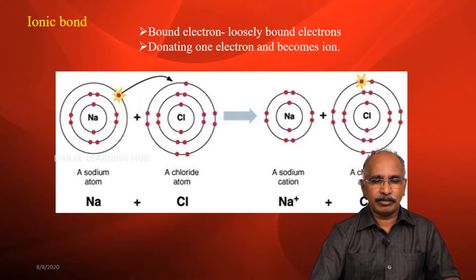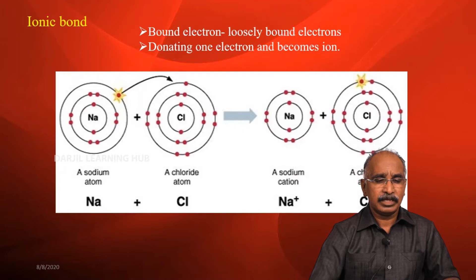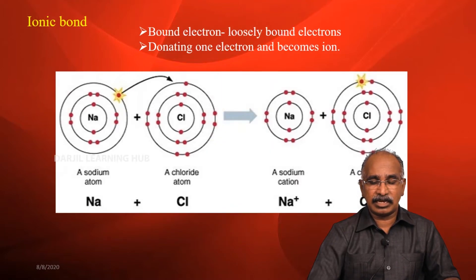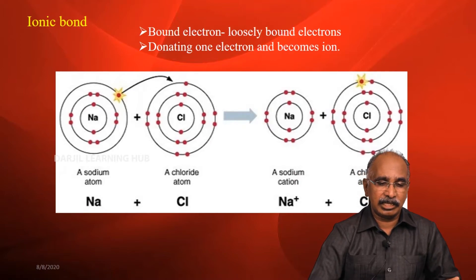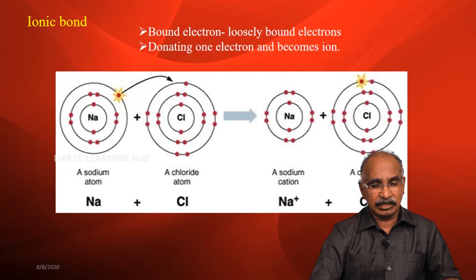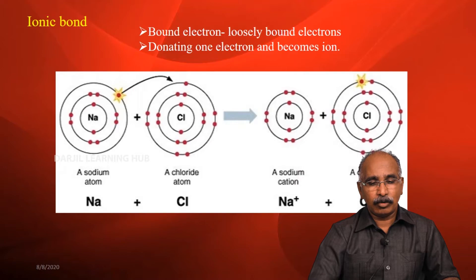In an ionic bond, we can look at the atomic structure. There is a nucleus at the center. In the first orbit, there are two electrons; in the second orbit, there are eight electrons; and in the outermost orbit, there is one electron. In another atom, the outermost orbit has seven electrons.